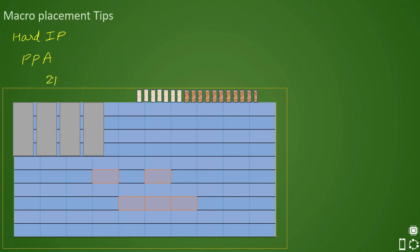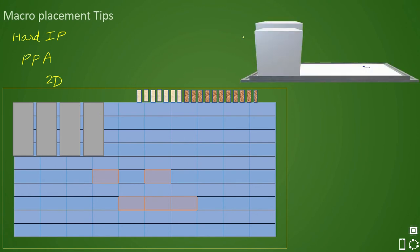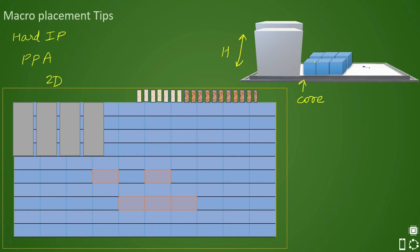In 2D you have length and width, but you cannot see the height. In 3D you can see the height as well. This is your core area — the placeable area. You can see that your macro is black-boxed. We have placed two macros back to back with certain spacing in between. You can clearly see that the height of a macro is more than that of a standard cell.